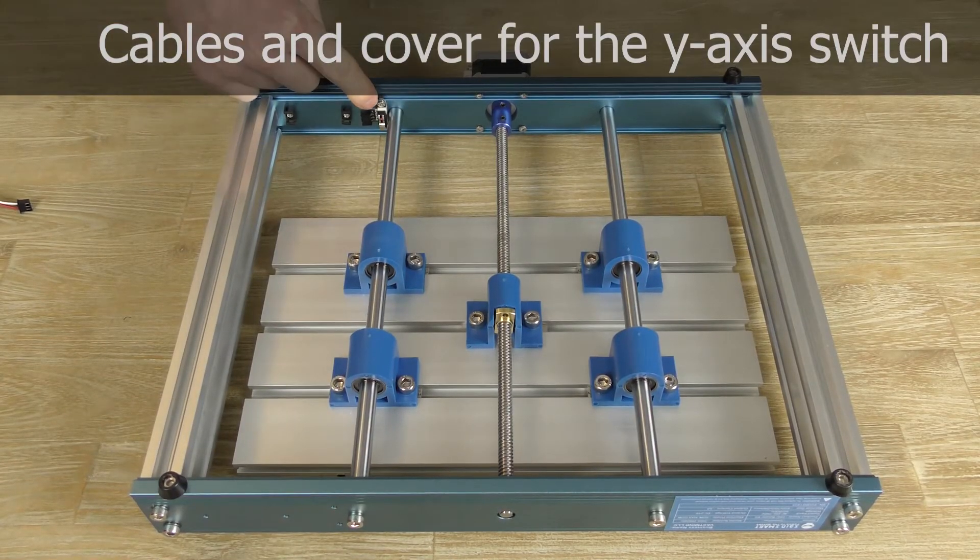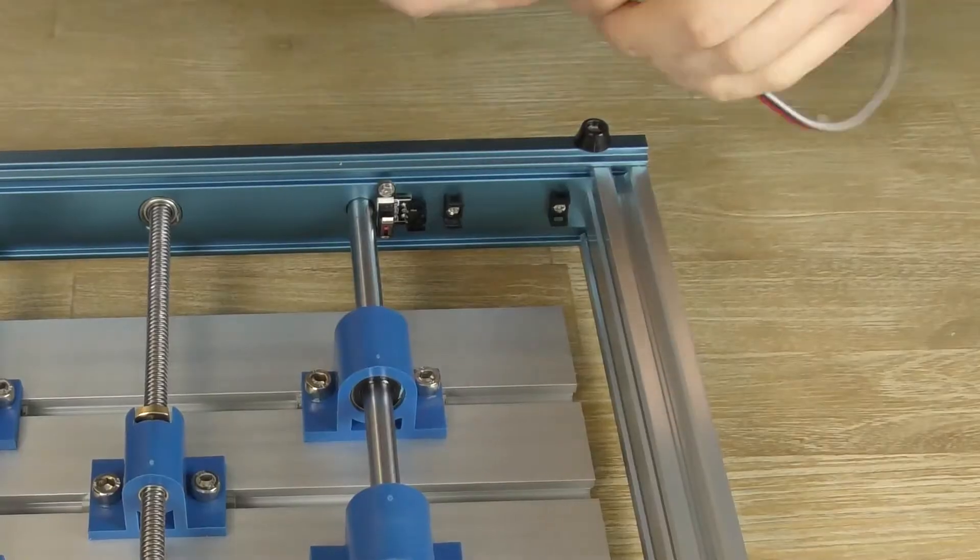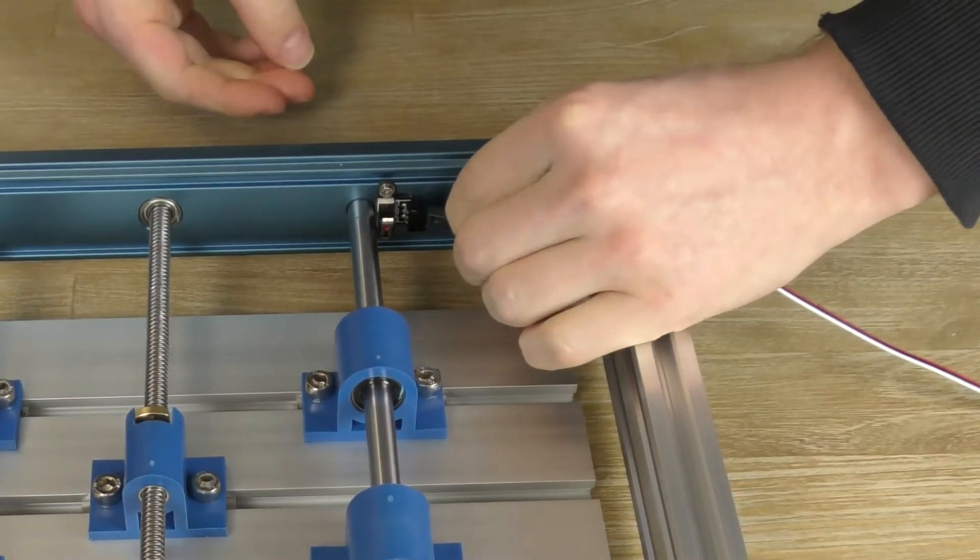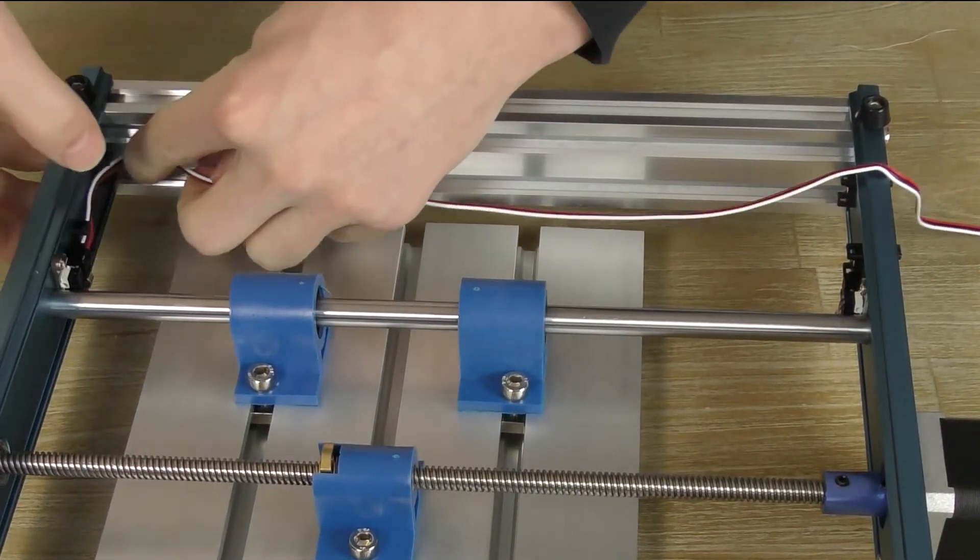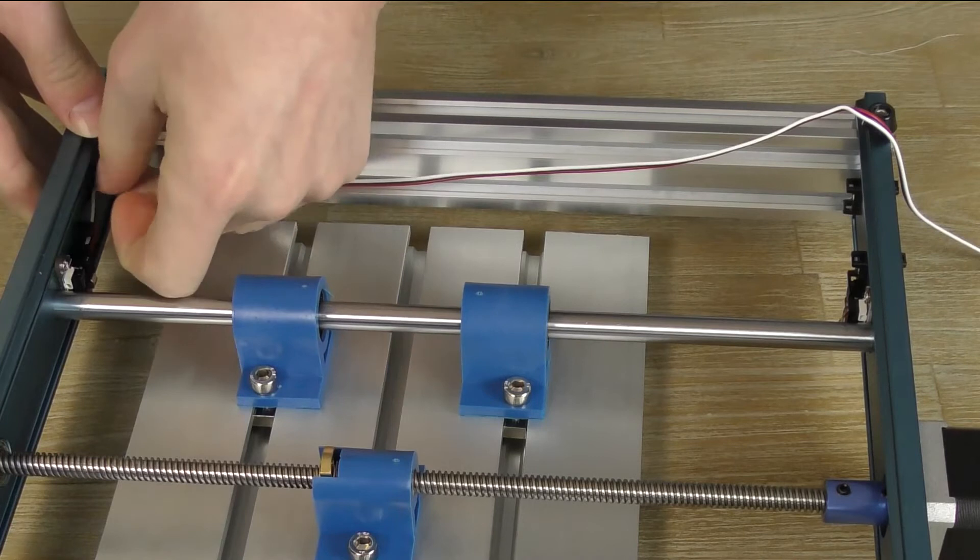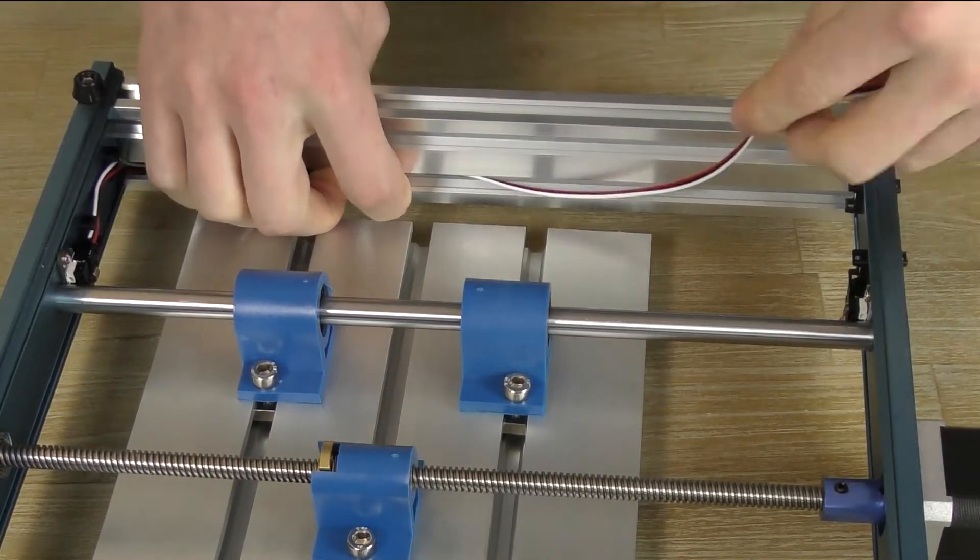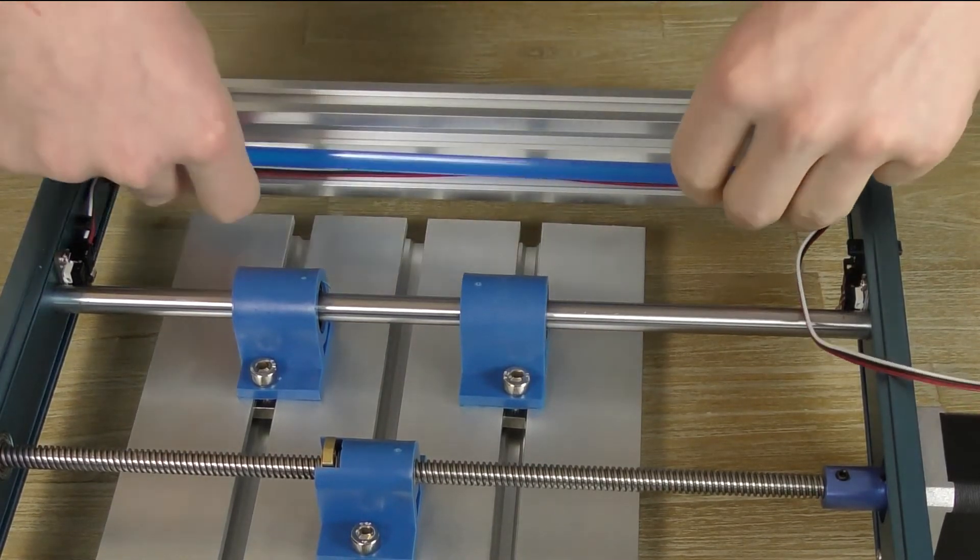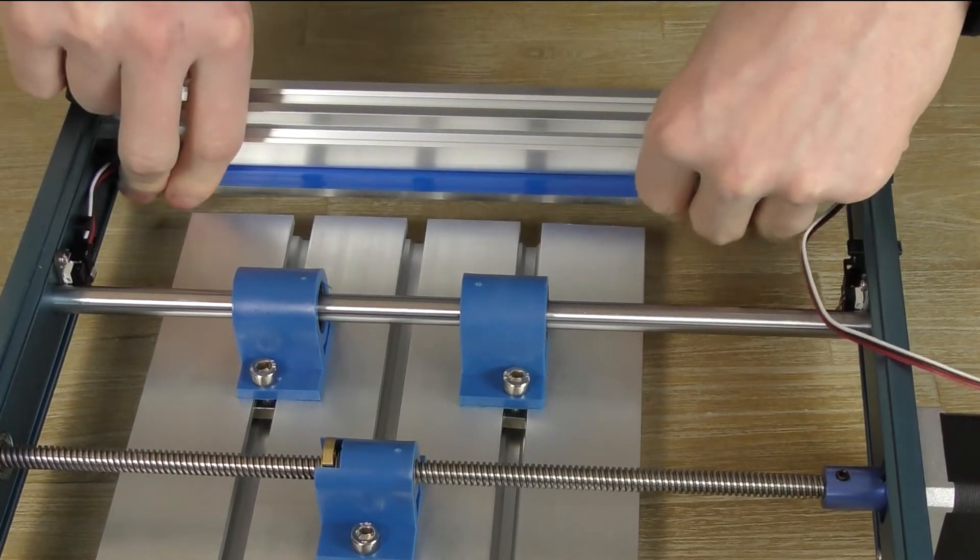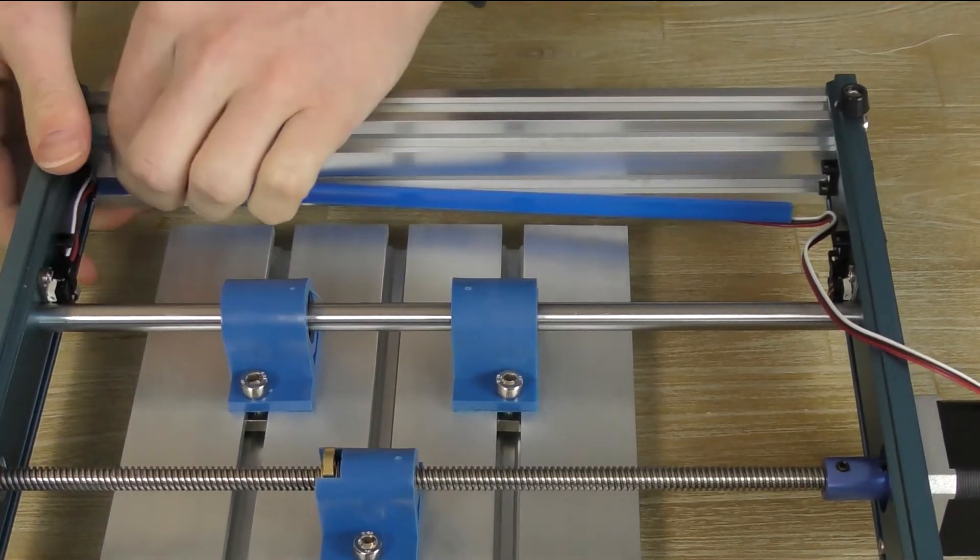Unlike the order in the manual, I suggest you connect the cables to the two limit switches before mounting the gantry. Because the bed is still upside down, it is way easier to reach with your fingers. Simply push the blue cover in on one end and while keeping pressure slide to the other side.